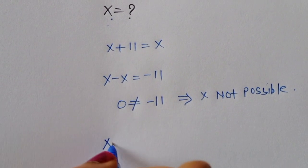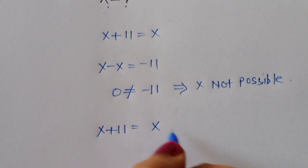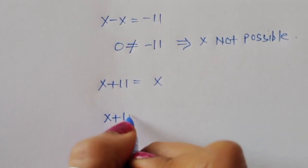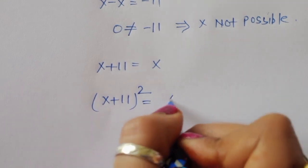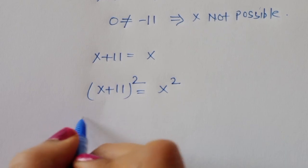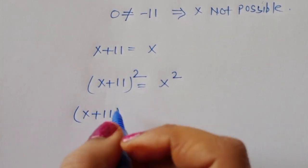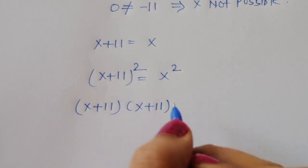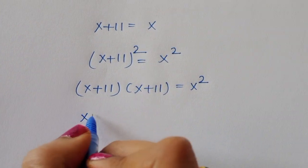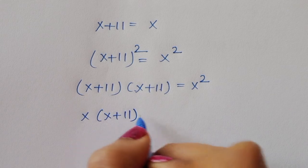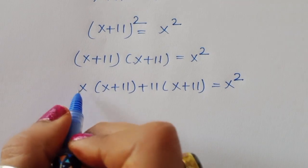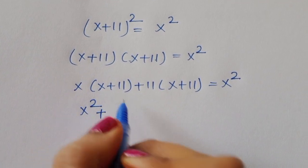Given √(x + 11) = x, we take the square on both sides. Squaring both sides gives (x + 11)² = x². We can write (x + 11)² as (x + 11)(x + 11) = x². Expanding: x(x + 11) + 11(x + 11) = x².